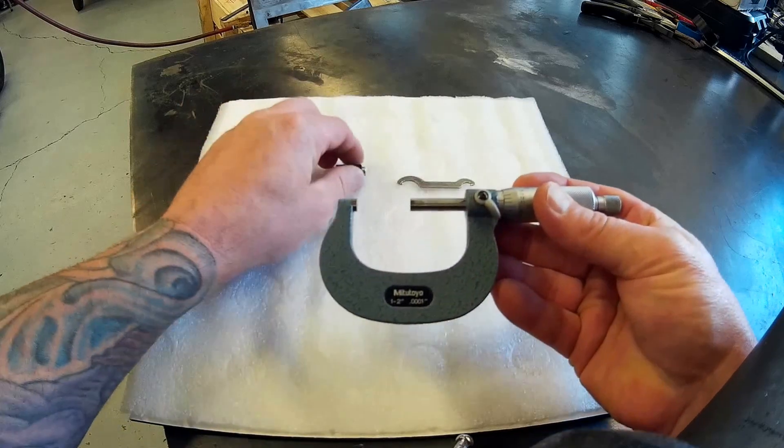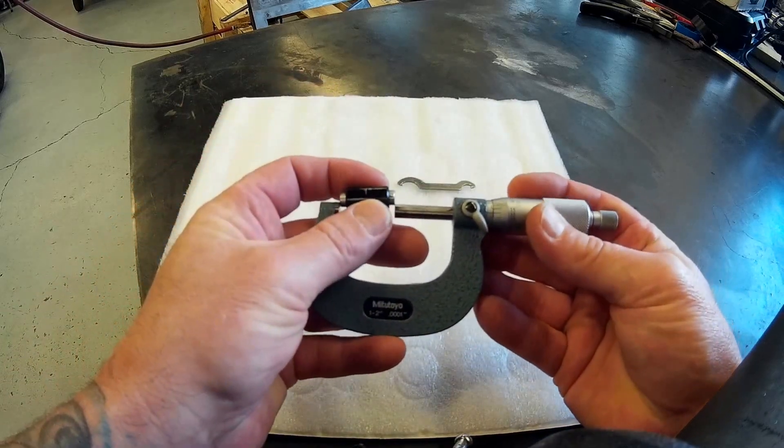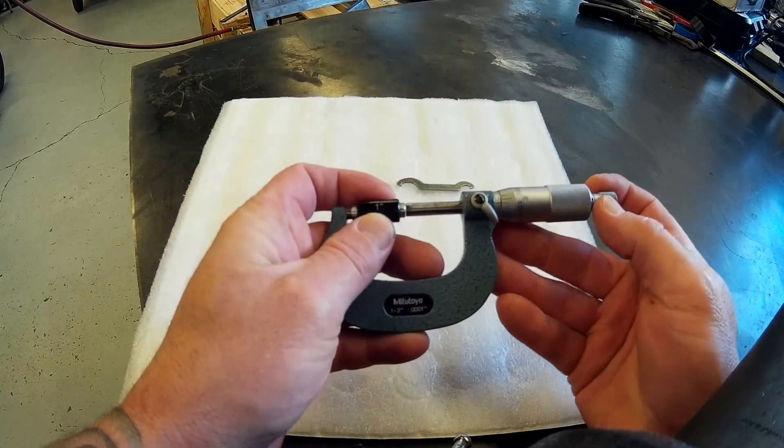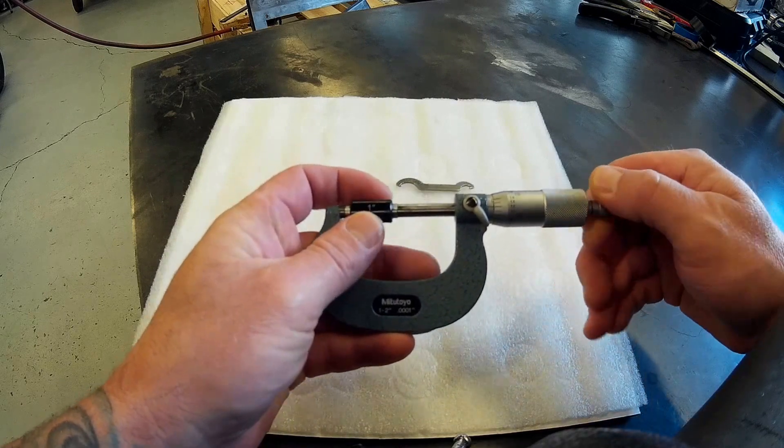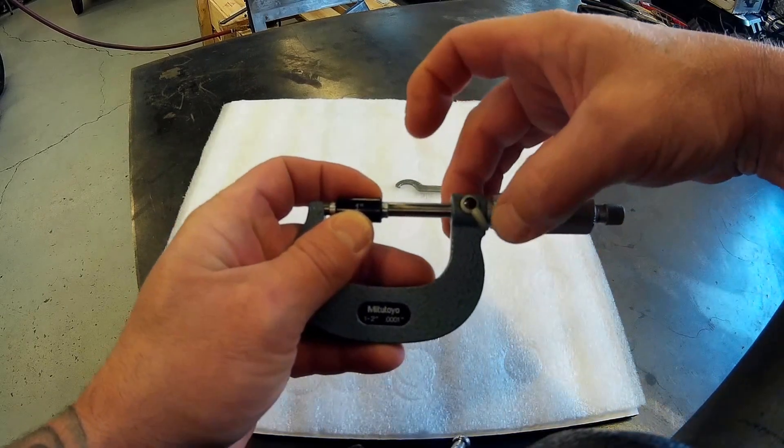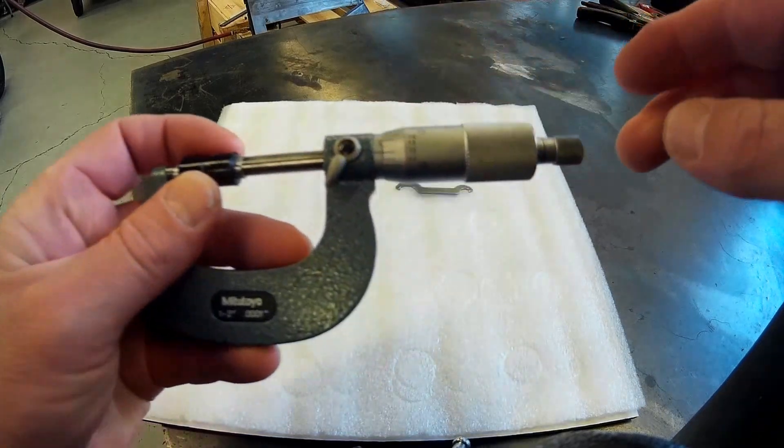Unlock it, put your 1 inch standard in there and crank it down. Ratchet, lock it.